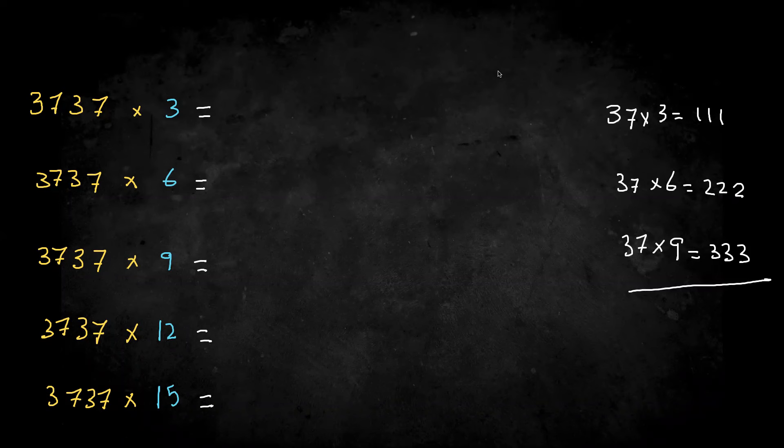Now, how about if we do the same thing, multiply by the multiples of threes, but it's not 37 now, it's 37 repeated, or 3737. Are we going to get a pattern the same way, or is it different? If we do that, what are you going to get at the beginning?